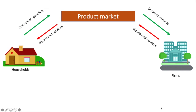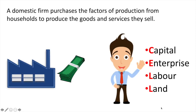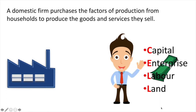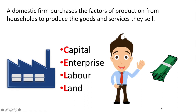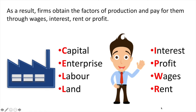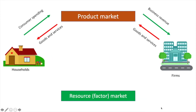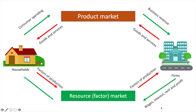We still need to complete the circular flow model. When firms produce the goods and services they sell to consumers, they need to employ the factors of production. A domestic firm purchases the factors of production from households, and each factor earns its financial reward. Firms obtain the factors of production, and households benefit from the rewards to those factors. Households offer the factors of production in the resource or factor market, and firms pay for these with wages, interest, rent, and profit.